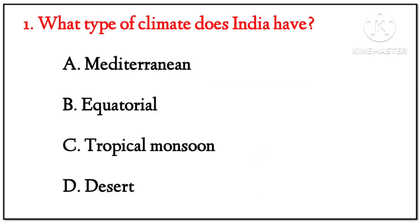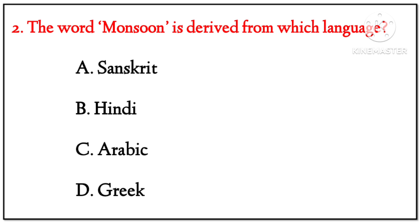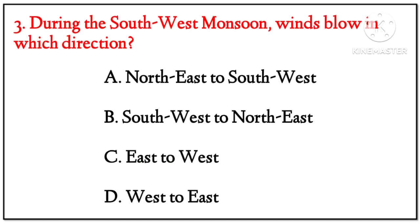Important MCQs: (1) What type of climate does India have? Options: Mediterranean, Equatorial, Tropical Monsoon, Desert. Answer: Tropical Monsoon. (2) The word 'monsoon' is derived from which language? Options: Sanskrit, Arabic, Greek. Answer: Arabic, meaning 'season.'